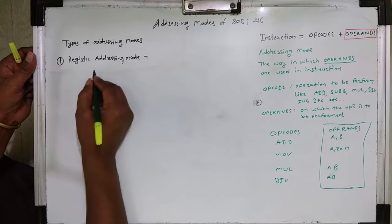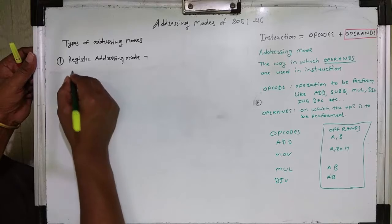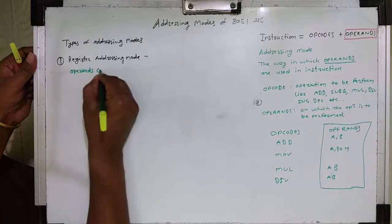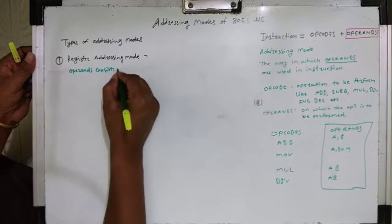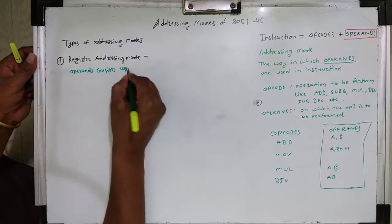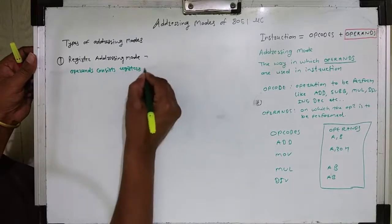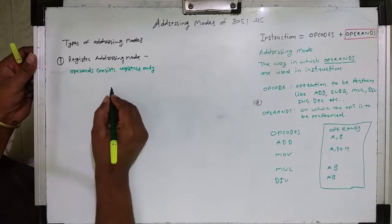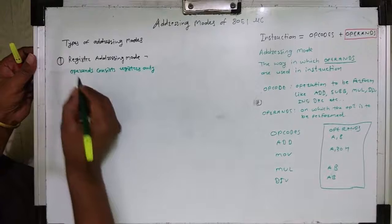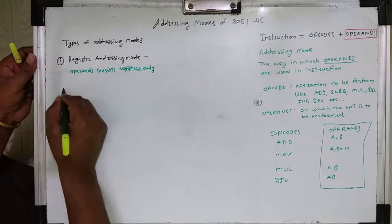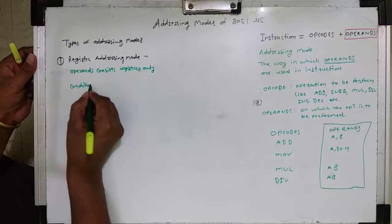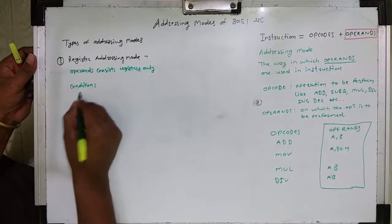The index register, such as the accumulator, is 8 bits. Other 8-bit registers include register B and register bank registers R0 to R7. 16-bit registers are the program counter and data pointer.